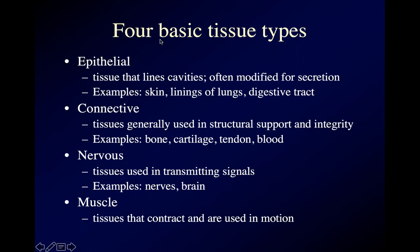Nervous tissue transmits signals — your nerves and your brain and your spinal cord are made of nervous tissue. And muscle tissue is the only tissue that contracts, the only tissue that moves on its own in a coordinated way — that is, your muscles.